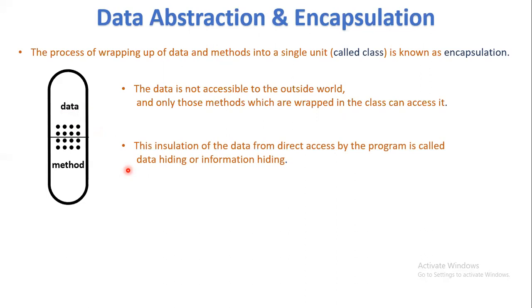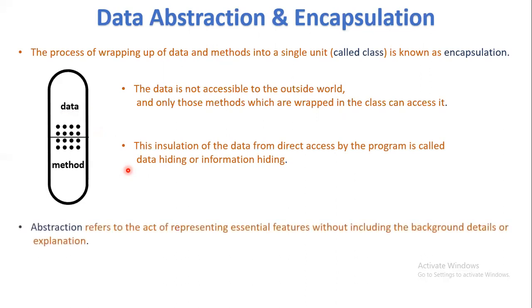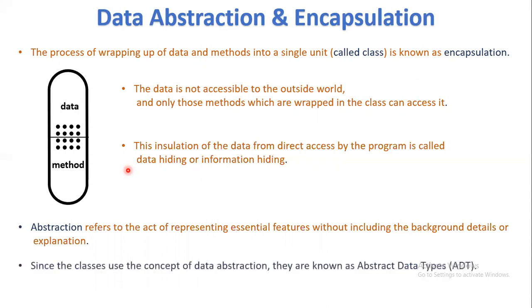Abstraction is the process of presenting essential features only, without including background details. It is the process of presenting necessary information by hiding unnecessary information. That's why a class embodies the concept of data abstraction and is also called an abstract data type.